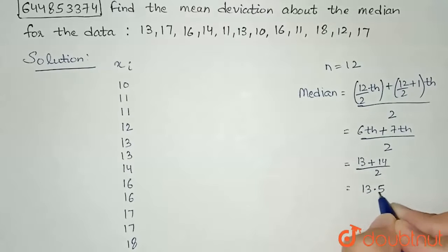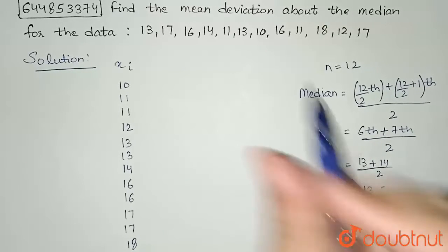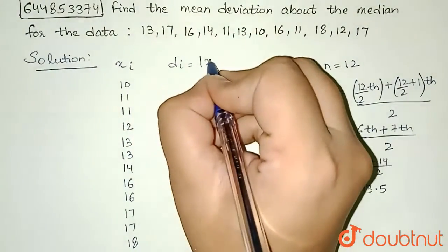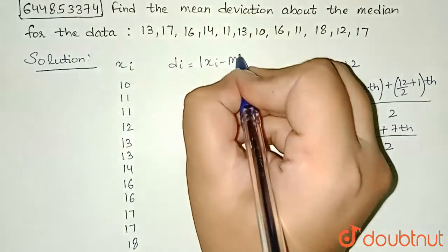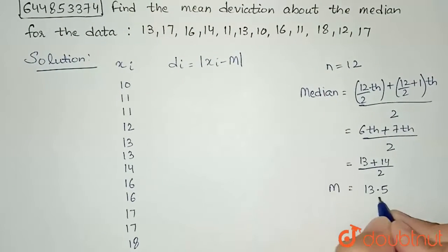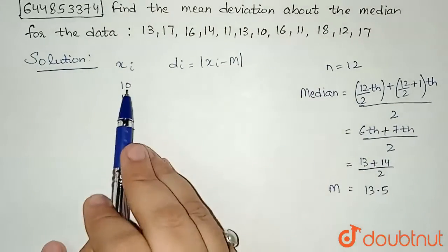Now to calculate mean deviation, I need to calculate di, which is defined as mod of xi minus capital M, where capital M is the median. I have got my value of capital M, the median, as 13.5. So let us calculate this xi minus M.